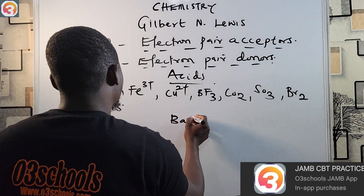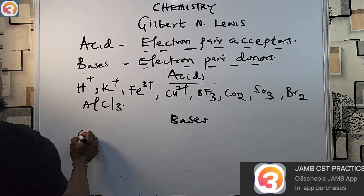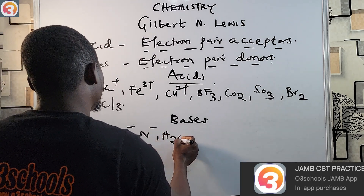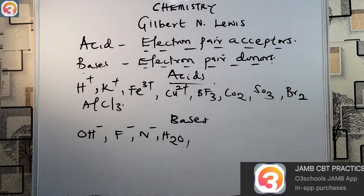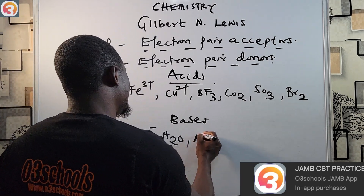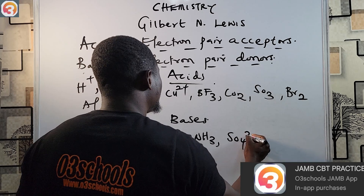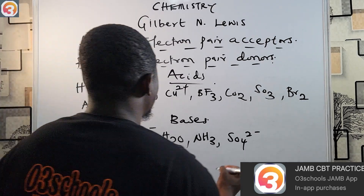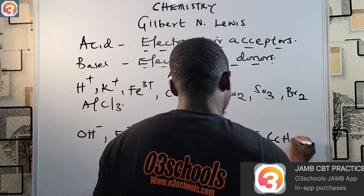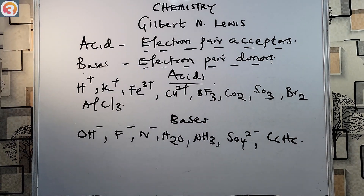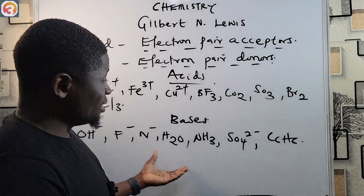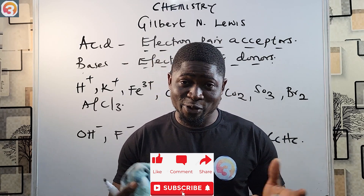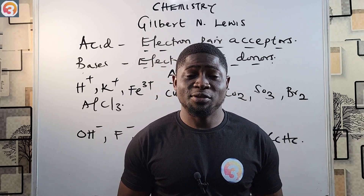Examples of Lewis bases include the fluoride ion F⁻, nitrogen, water H₂O, ammonia NH₃, sulfate SO₄²⁻, and benzene C₆H₆. Please make sure you take note of these and keep them in mind. Subscribe to this YouTube channel and we will continue our episode on acids, bases and salts in the next episode — thanks for watching.